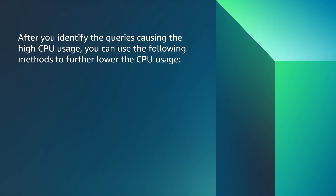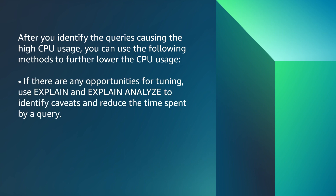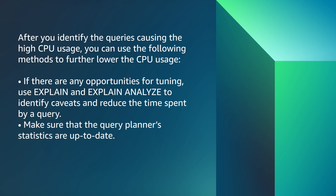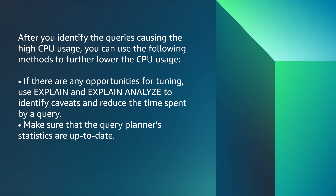After you identify the queries causing the high CPU usage, you can use the following methods to further lower the CPU usage. If there are any opportunities for tuning, use EXPLAIN and EXPLAIN ANALYZE to identify caveats and reduce the time spent by a query. Make sure that the query planner's statistics are up to date. If there is a query that is running repeatedly, consider using prepared statements to lower the pressure on your CPU, as repeated execution of prepared statements will cache a query plan and any further runs will reduce the time for planning since the plan is already in cache.